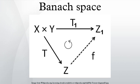The Hahn–Banach separation theorem states that two disjoint non-empty convex sets in a real Banach space, one of them open, can be separated by a closed affine hyperplane. The open convex set lies strictly on one side of the hyperplane; the second convex set lies on the other side but may touch the hyperplane. A subset S in a Banach space X is total if the linear span of S is dense in X. S is total in X if and only if the only continuous linear functional that vanishes on S is the zero functional; this equivalence follows from the Hahn–Banach theorem.